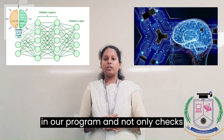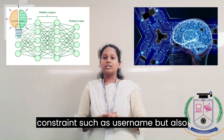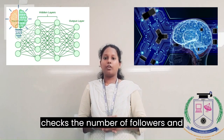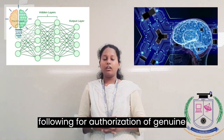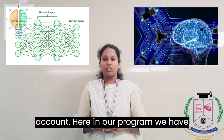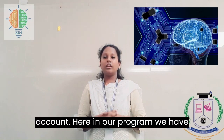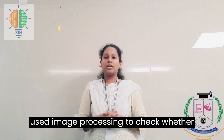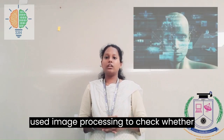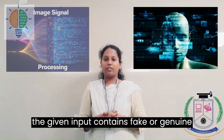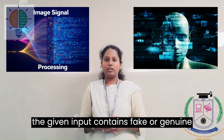In our program, ANN not only checks constraints such as username, but also checks the number of followers and following for authorization of a genuine account. We have also used image processing to check whether the given input contains fake or genuine details.